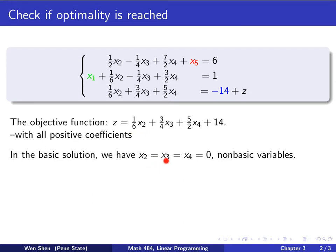So another important key factor to remember is in the basic solution, we have x2, x3, x4 equals 0. That's why z is 14 there. These are non-basic variables.